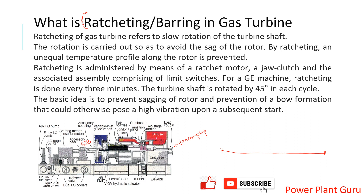If I shut down the machine and keep this shaft stationary, the normal tendency is that because this shaft is very long, it will have a tendency to bow down or sag because of its weight and center of gravity. Although it will have this tendency even when cold, after shutdown it is hot, and this sagging tendency is much higher when it is hot — because of the metal properties.